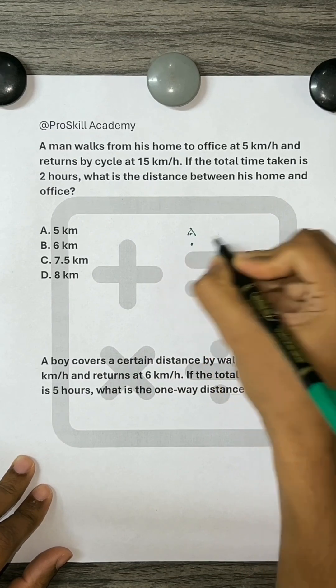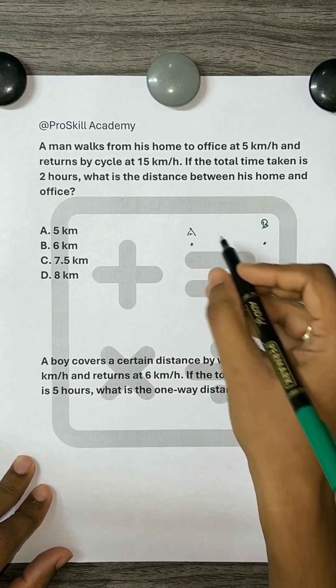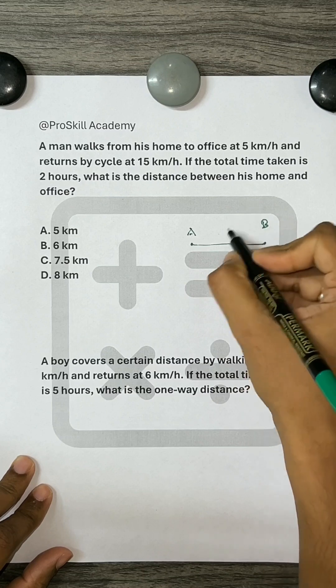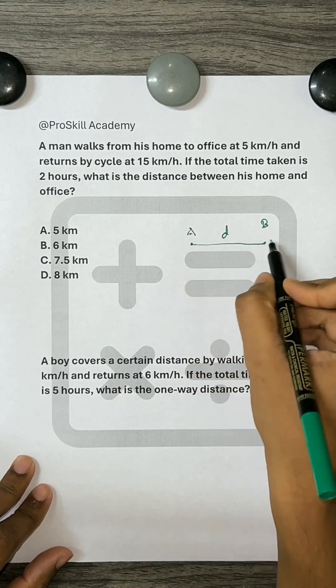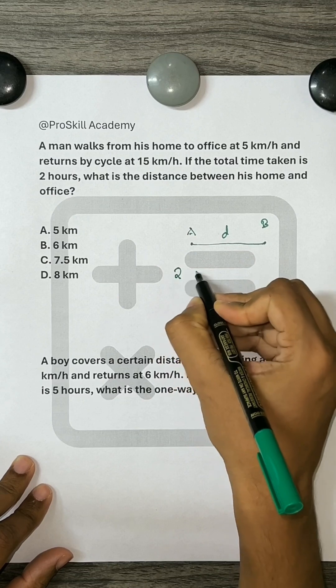Let A be the point from where the man starts and B be the point where the man ends. And let the distance between these two points be D. According to our condition, to travel this distance to and fro, the man takes 2 hours.